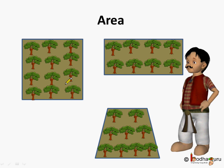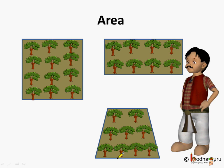So, what we are trying to measure is the size of the shape. Or, in other words, we are trying to find the region bounded by the shape. Basically, here it is the region which is filled with trees. So, the area is this region which is filled with trees. This is the whole area which is bounded by the shape and filled by trees — that is the area of the shape.